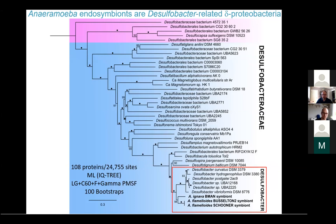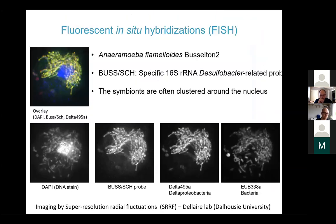We extracted the 16S gene and designed FISH probes to confirm these were indeed the right organisms. We got a very clear signal in Basaltone and Schooner, confirming that these cells indeed match the genomes we had sequenced.